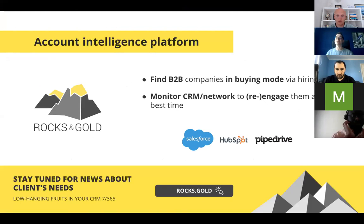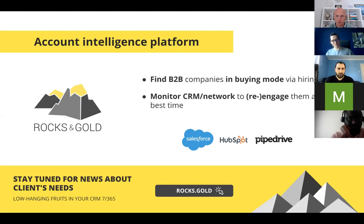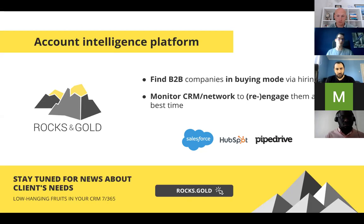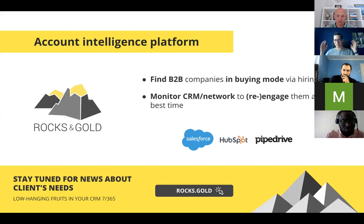What Rocks Gold Platform does is help you find B2B companies in buying mode via hiring data. It's a highly searchable platform with data from 20-plus job boards where you build filters to see exactly what you need. You can filter out recruiting companies, no fake profiles. With two clicks you can say: show me only fintech companies looking for UI/UX designers, or companies looking specifically for consultants. You type it and you see the list of companies searching for specific expertise.